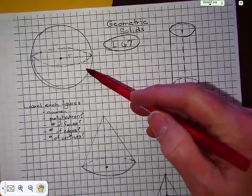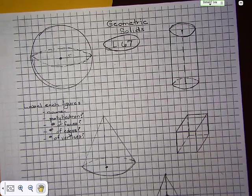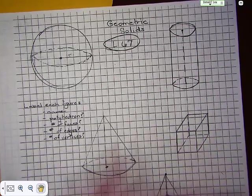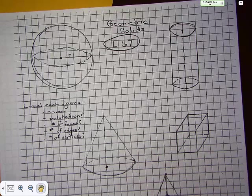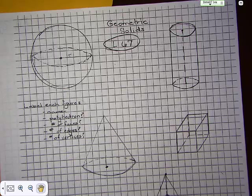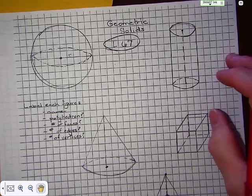Now, a sphere is not a polyhedron because it doesn't have a flat face. It doesn't have a flat surface. It is round. You can find the volume of a sphere. You can find the surface area of a sphere. But it's all having to do with using pi. And so it's not a flat rate type of thing.